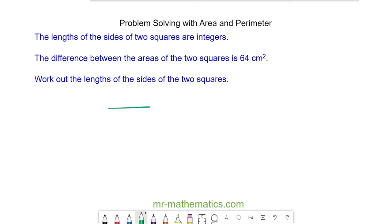In this question, we have two squares where the lengths are both integers and the difference between the areas of the two squares is equal to 64 centimetres squared.